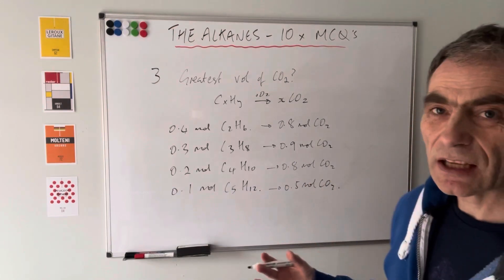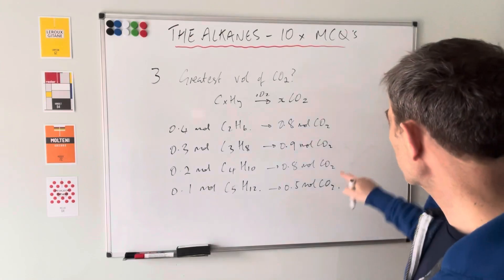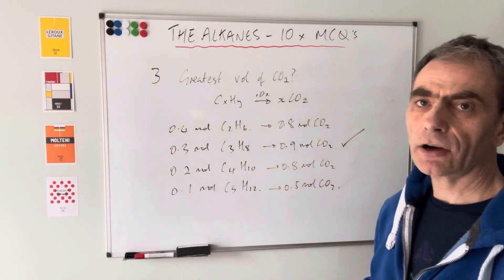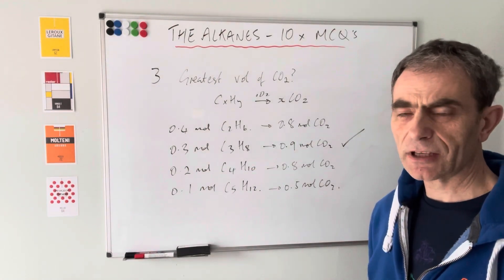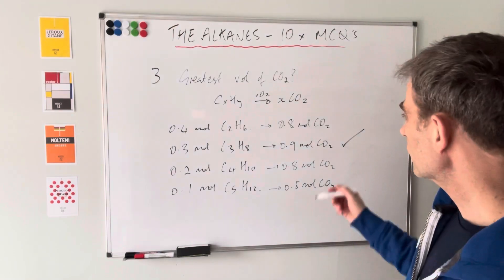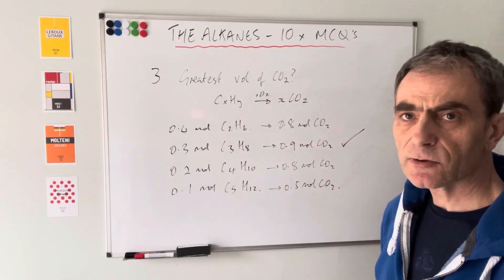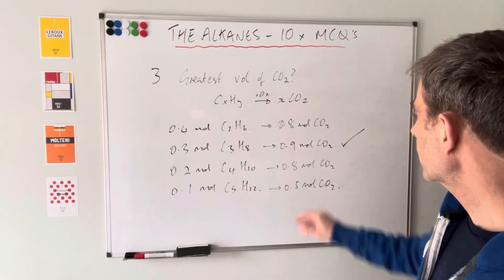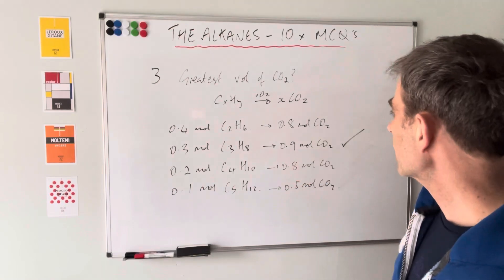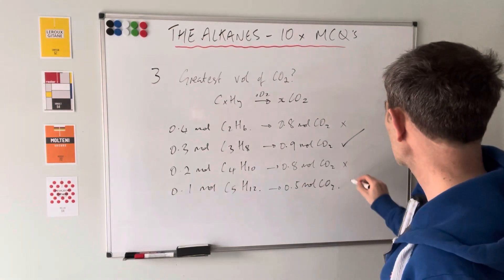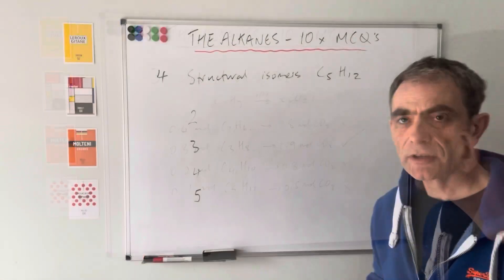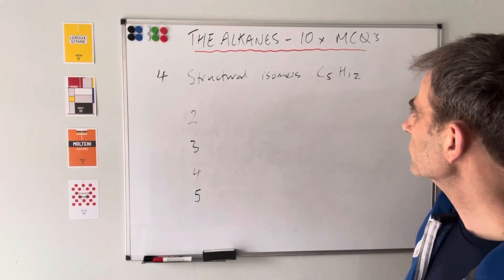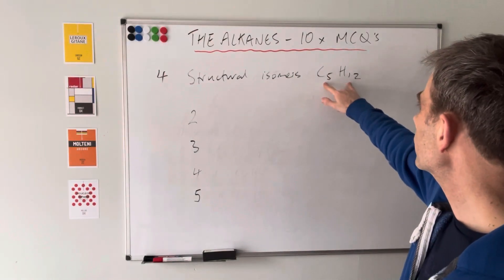We don't need to work out the volume - we know that the three-carbon option creates the greatest moles of CO₂ at 0.9 moles, so it will create the greatest volume. You would just multiply by 24 dm³ to get the volume, but that was the answer.